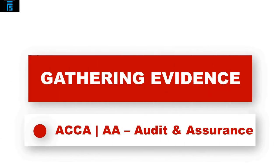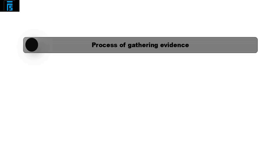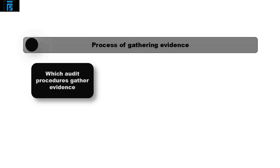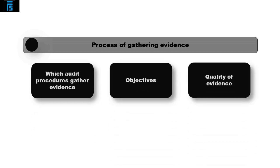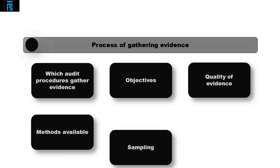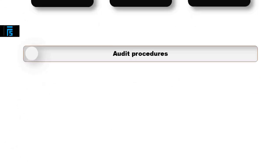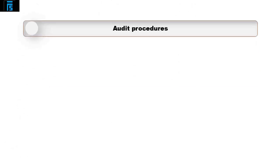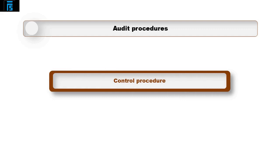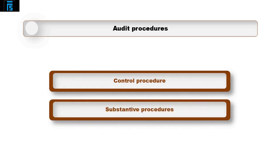This video covers the area of gathering evidence. To understand the process during an external audit, we need to cover which audit procedures gather evidence, the objectives, the quality of evidence required, the methods available, sampling, and conclusions. The external audit is made up of many audit procedures, and each test will gather evidence to help the auditor form an opinion. The two main areas are controls procedures and substantive procedures.